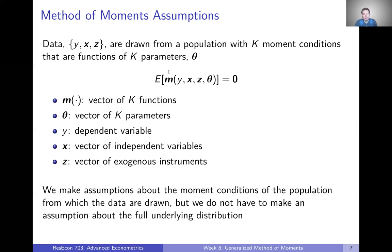So these functions here, m, those are going to be our moment conditions that are functions of data and parameters, and we're going to have k of those. And in expectation, in our population evaluated at the true parameter values, those things equal zero.